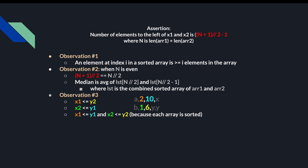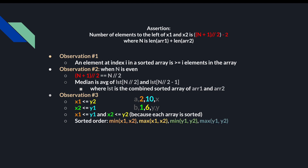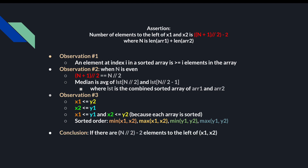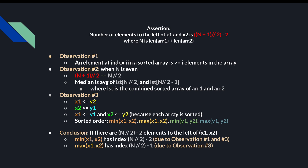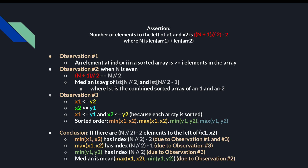Therefore, if we were to sort these four colored numbers, we'd have min(x1, x2) first, then max(x1, x2), then min(y1, y2), and then finally max(y1, y2). Putting it all together, due to observations 1 and 3, we know that min(x1, x2) has index floor(N / 2) minus 2, max(x1, x2) has index floor(N / 2) minus 1, and min(y1, y2) has index floor(N / 2). Therefore, due to observation 2, the median is going to be the mean of max(x1, x2) and min(y1, y2).